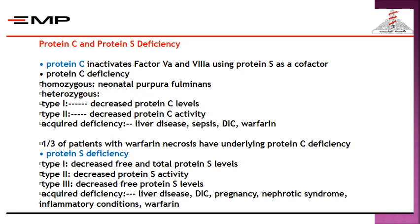Protein C is a natural anticoagulant that inactivates factor V and factor VIII using protein S as a co-factor. Protein C deficiency may be homozygous — leading to neonatal purpura fulminans and diagnosed in pediatrics — or heterozygous, which is the type seen in adults, and may be type 1 (decreased protein C level) or type 2 (decreased protein C activity).